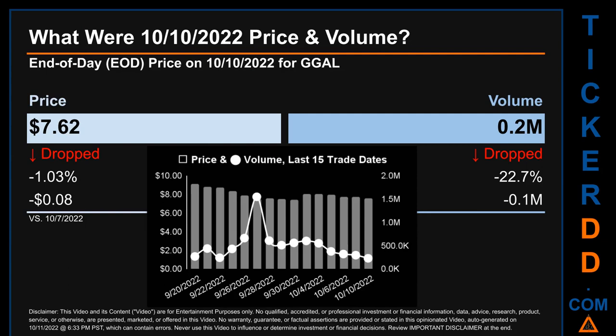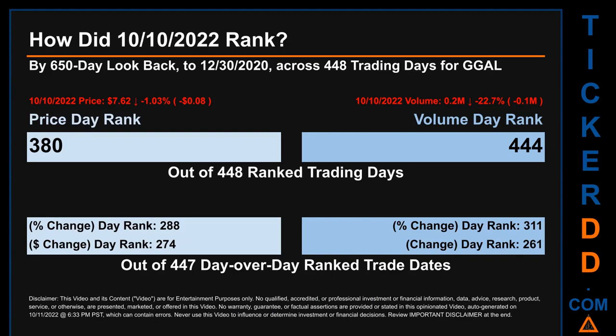The graph shows price and volume for the last 15 trade dates across a range of $1.66. The max and minimum end of day price were respectively $9.12 and $7.46. Volume saw a range of 1.3 million, from a day low of 228.8 thousand to a day high of 1.5 million.